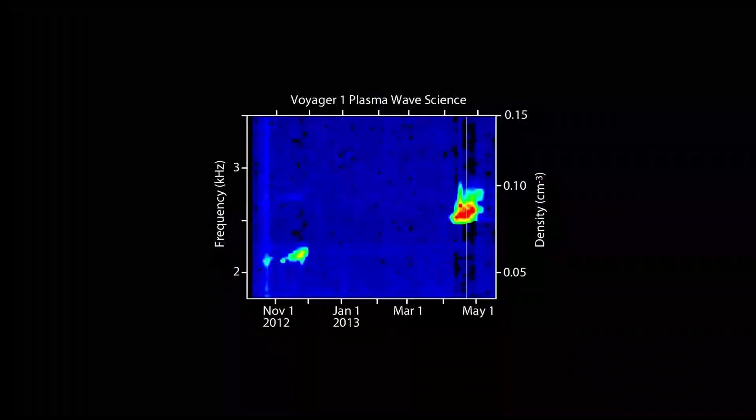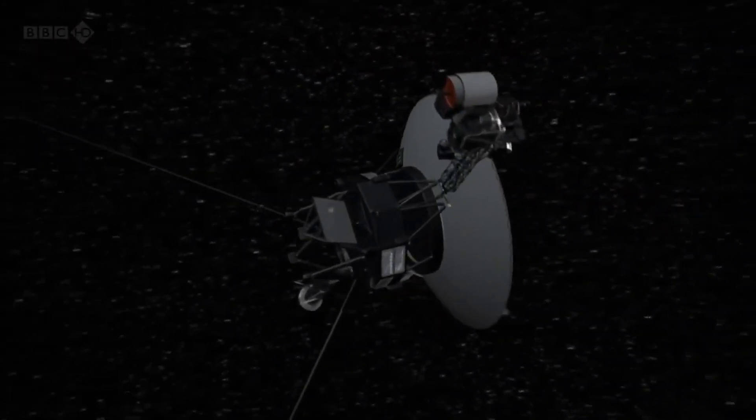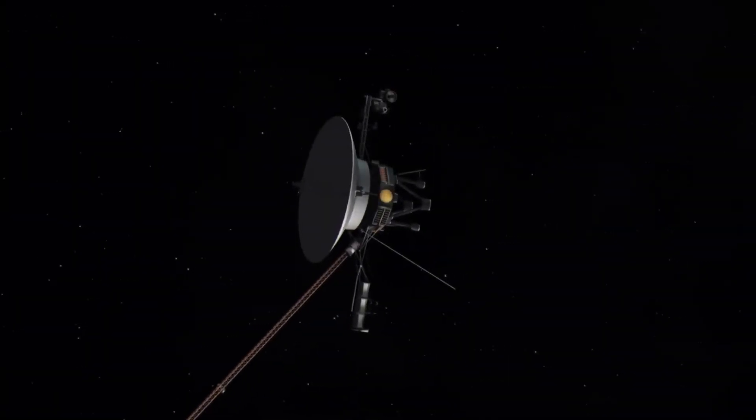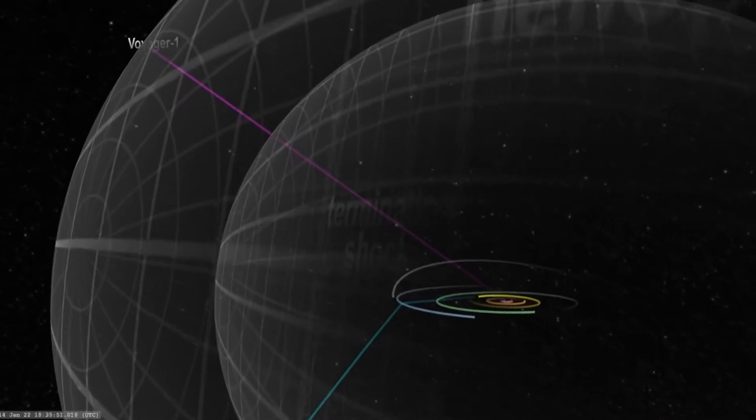153 billion miles - that is the almost unbelievable distance that Voyager 1 has put between itself and the sun since its launch in 1977. No other man-made object has ever ventured so far into the depths of space.